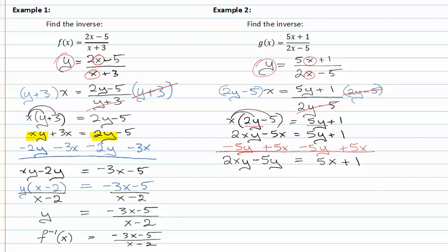From here, I can factor out the common factor of y in both the terms on the left side of the equation. Now that I've factored out the y, I can divide both sides by what's left in the binomial, 2x minus 5 on both sides. So now y is isolated on the left hand side of the equation, and it's equal to 5x plus 1 over 2x minus 5.